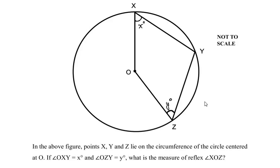Hello and welcome to my channel. In this video we are going to solve an example on circles. In the above figure, points X, Y, and Z lie on the circumference of the circle with center O. Angle OXY is equal to x degrees and angle OZY is equal to y degrees.